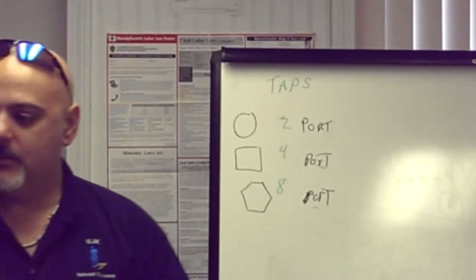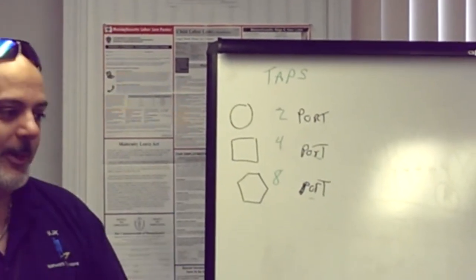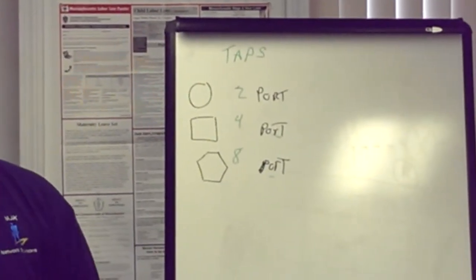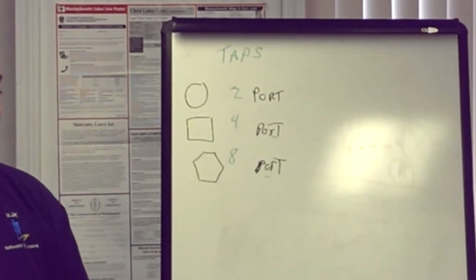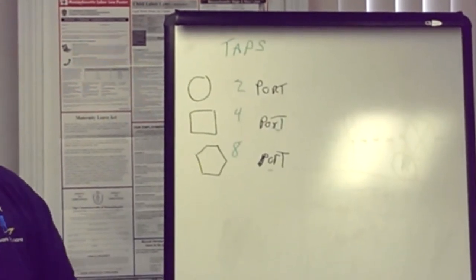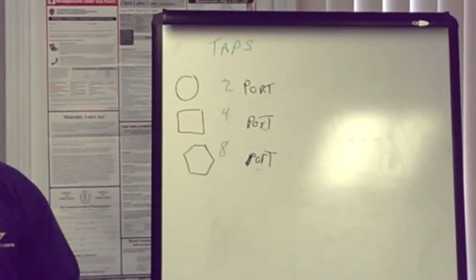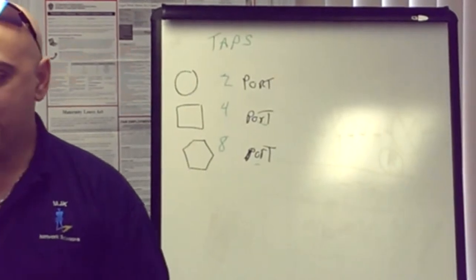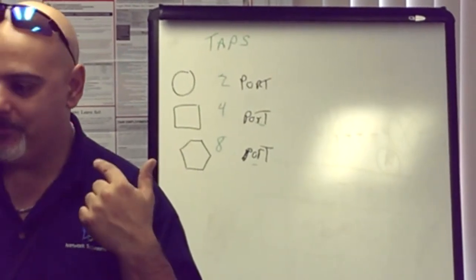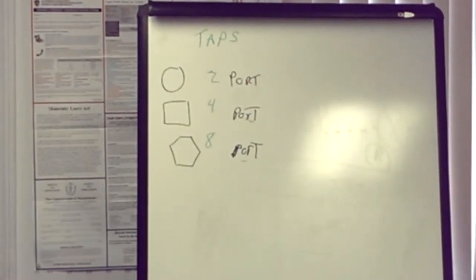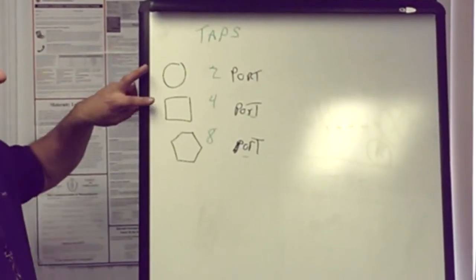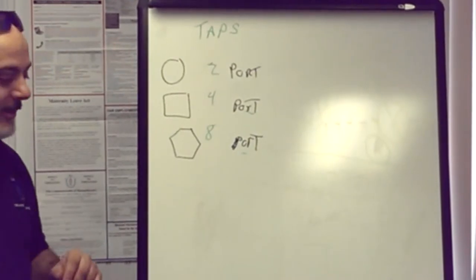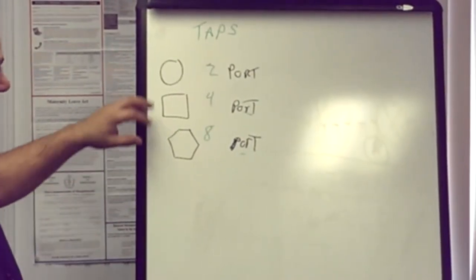Now why are there no six-ports? Because we don't use them. So if I've got five houses feeding from a pole and I need five ports, which one goes up? The eight. That's by design. Some people go crazy and put a two and a four up there — that's when you talk to design about that.